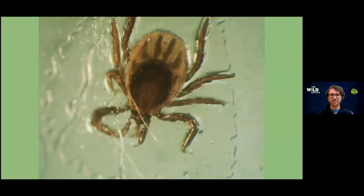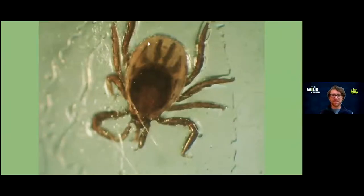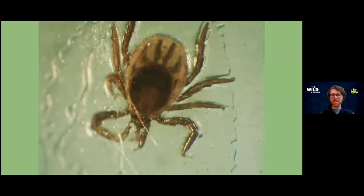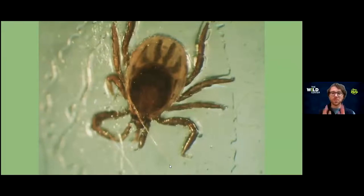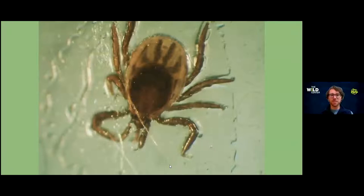Next up — insect or not, and what could it be? We've got a lot of people saying it's a tick — you're exactly right. This is a nymph or larval stage of a black-legged tick, or deer tick. It is not an insect. Ticks have four sets of paired legs and are related to spiders — they're arachnids. Both are arthropods with exoskeletons, but in this case it's an arachnid, not an insect.